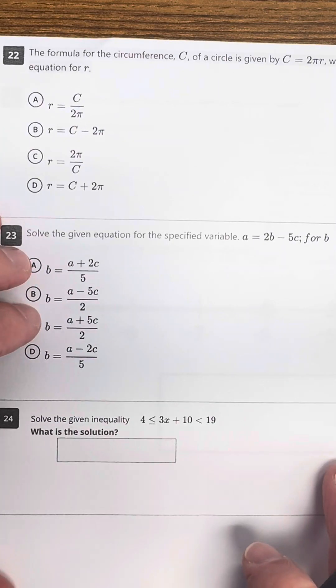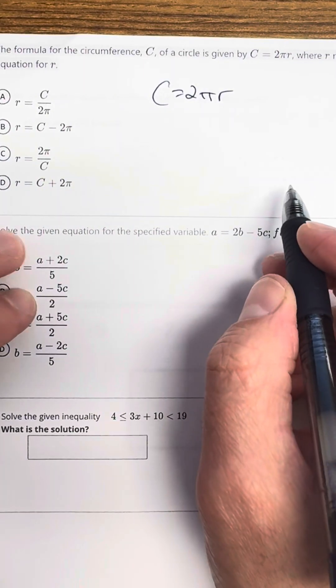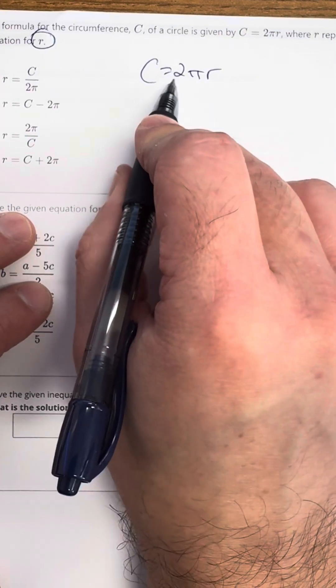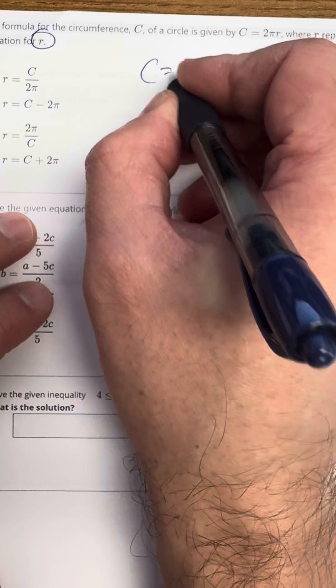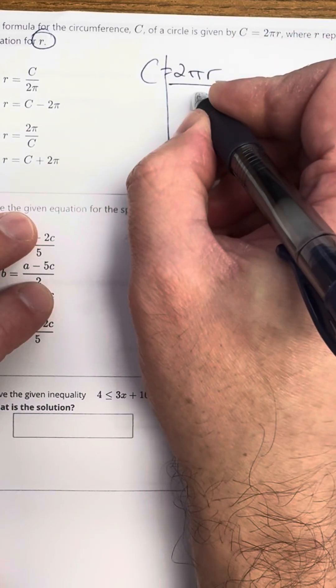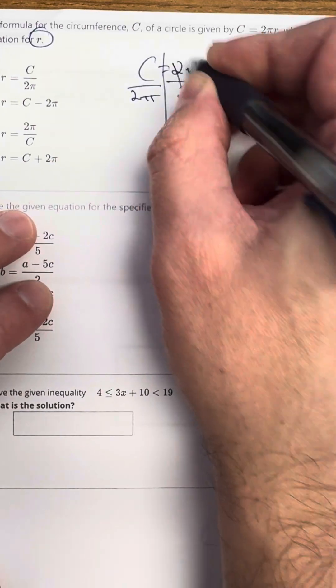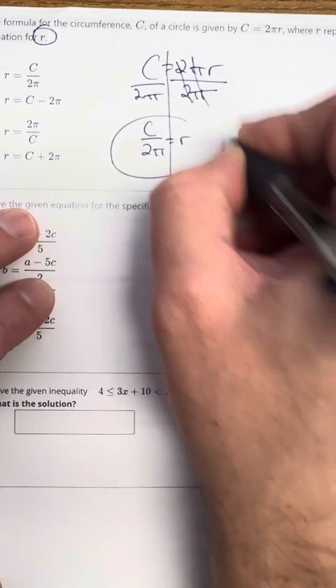Okay, circumference formula is C equals 2 pi R. And I want to solve for R. So I want to get R by itself. In this one, the 2, the pi, and the R are all linked on the same side by multiplication. So I am allowed to unlink what I don't want on both sides. So the 2 and the pi go away. I get C over 2 pi equals R. Done deal. And that's going to be choice A.